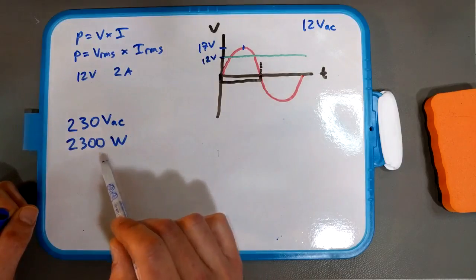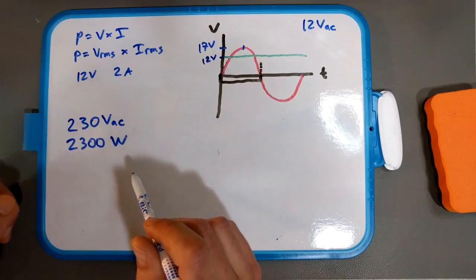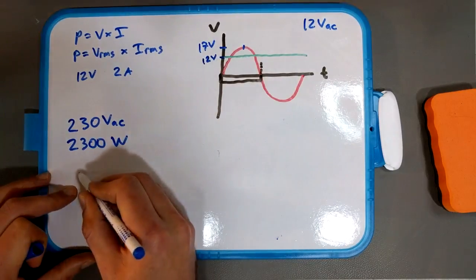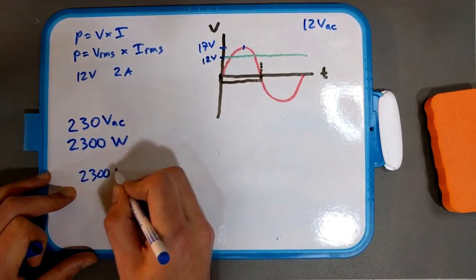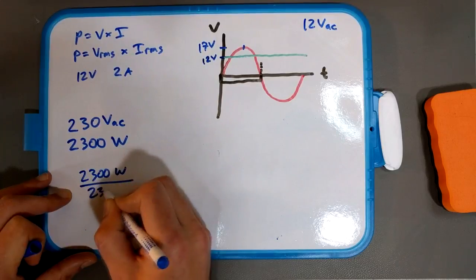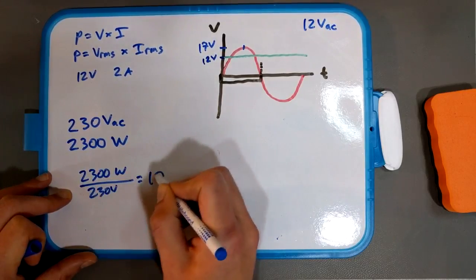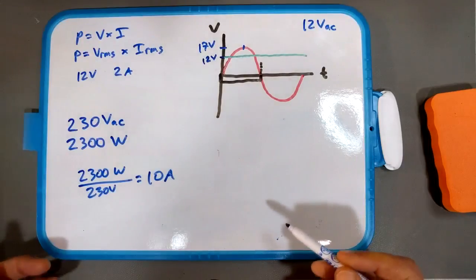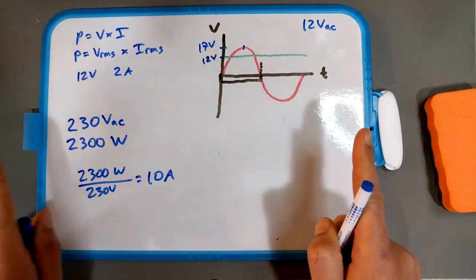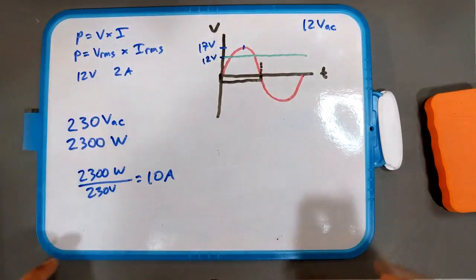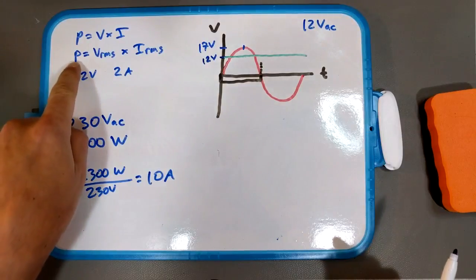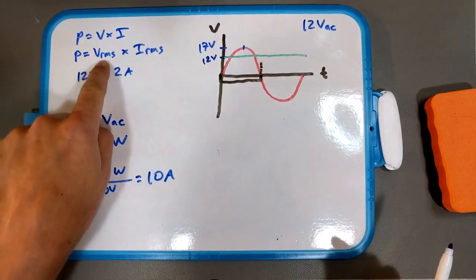So, well, hang on a minute, can't you just say let's just take 2300 watts and divide by 230 volts and you get 10 amps. Well, you're done, right? Sort of. Not really. Because, as I mentioned, P equals VRMS times IRMS. When you're dealing with AC,